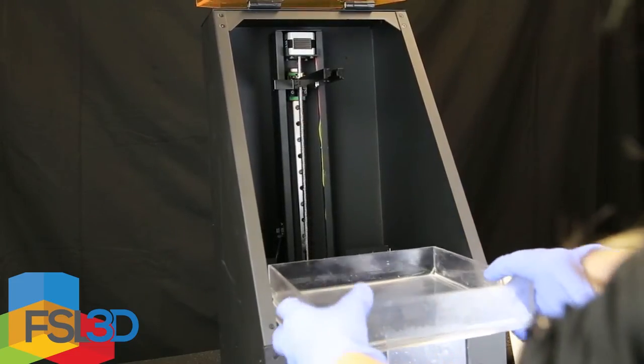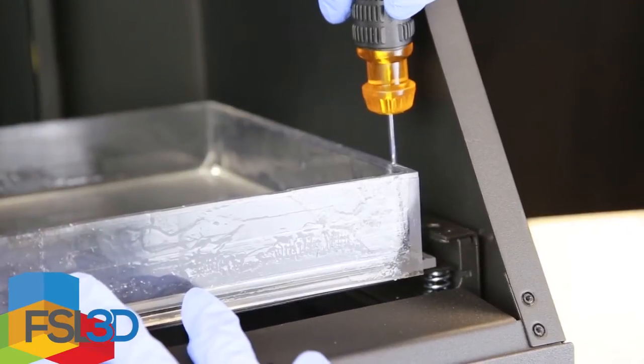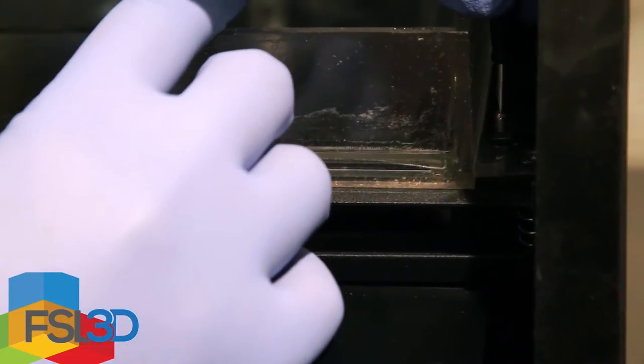First you're going to slide the vat into the printer. It should enter smoothly but will not sit securely. Use a flathead to secure the four corners of the tray. Tighten enough to keep the tray in place but do not over tighten.